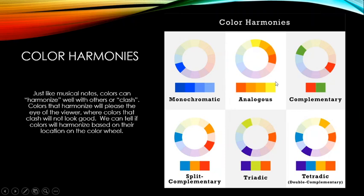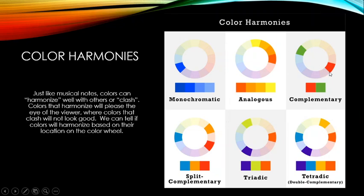Complementary colors are a really important harmony — you pick a color and then directly across from it on the color wheel is its complementary color. Any color you pick, whatever is directly across the wheel from it is a complementary pair. They're very visually striking color combinations.